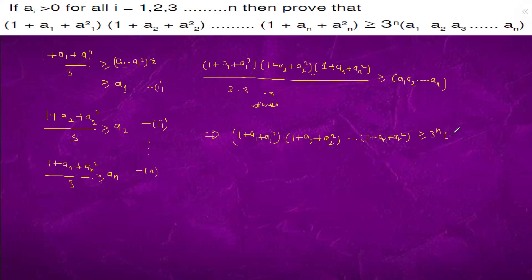The right-hand side gives us a1, a2, dot dot dot, an, multiplied by 1 plus a1, a2, and so on.